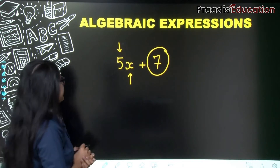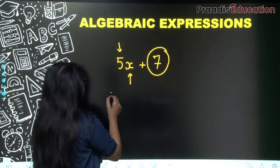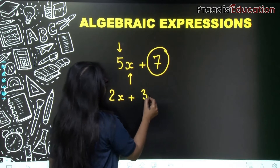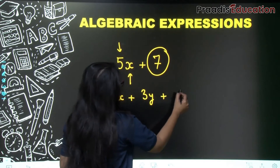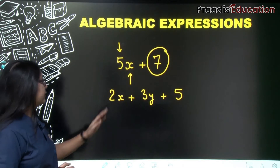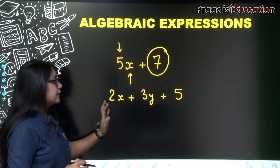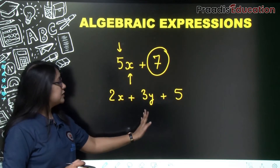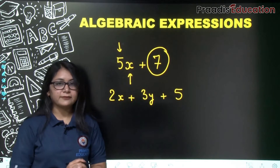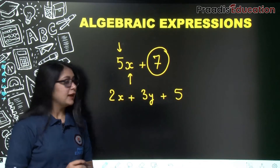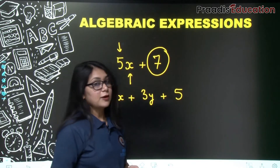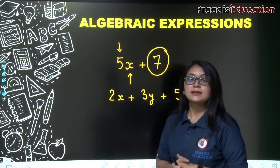We also have algebraic expressions in more than one variable. In this expression, we have coefficient 2, variable x, again coefficient 3, variable y, and constant term 5. So 2 is the coefficient of x and 3 is the coefficient of y. Till now, we all know all these things, correct?